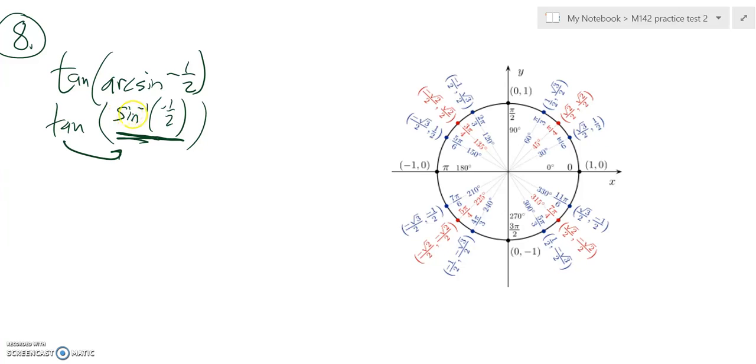So sine is about height, sine is about y, so the negative one-half is here, that's here. It's actually not 11 pi over 6, it's negative pi over 6. But it's in the same spot, so we can actually call it what we want.